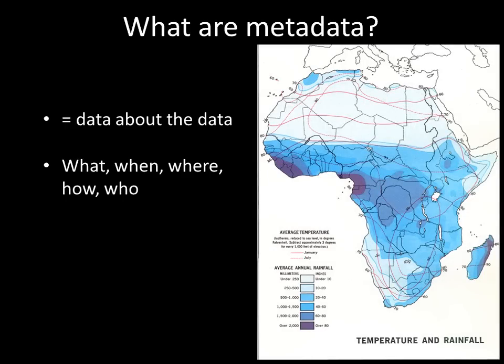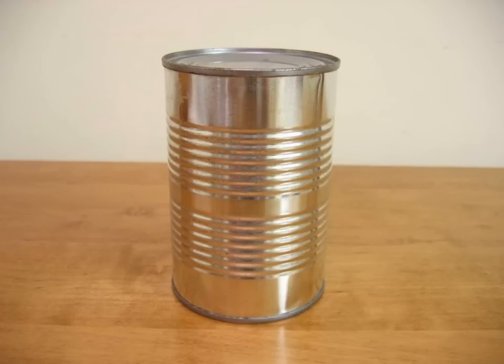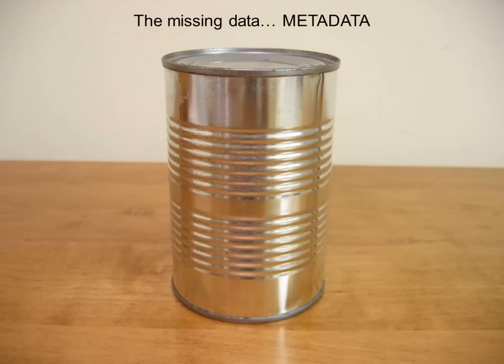For example, you can consider a legend on a map to be a type of metadata, as the map legend tells you what the map means in terms of showing symbol colors, classes, and so forth. Another simple way you might think of metadata is thinking of a can without a label — the label tells you what's inside the can.